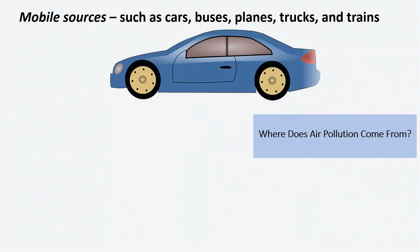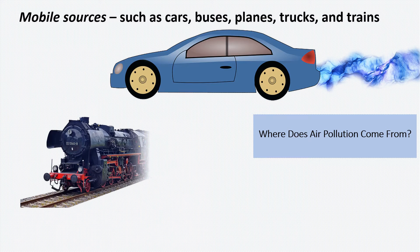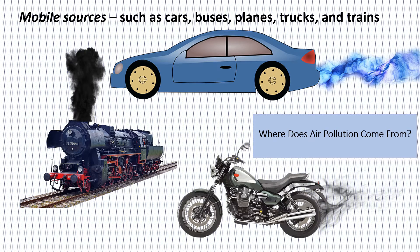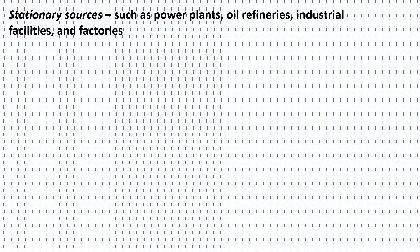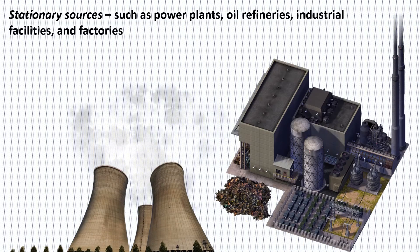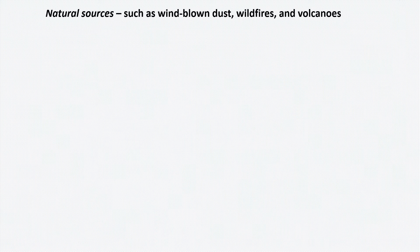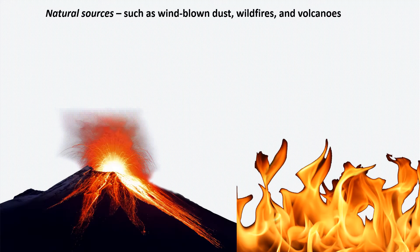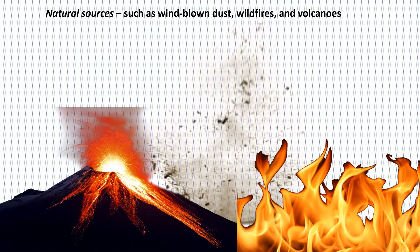Mobile sources: when a car moves, smoke comes from the exhaust. Look at this train engine — it also has smoke. These are called air pollution. Stationary sources are things that are not moving, like power plants, oil refineries, or industries. Natural sources include fire, volcanoes, and dust storms — all of these cause air pollution.